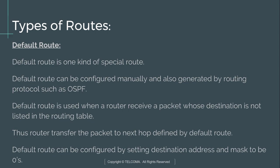The default route is a special kind of route that can be configured manually as well as dynamically — it is generated by routing protocols such as OSPF. The default route is used when a router receives a packet whose destination is not mentioned in the routing table; the router transfers the packet to the next hop by following its default route. Default routes are configured by setting the destination address and subnet mask to zero.